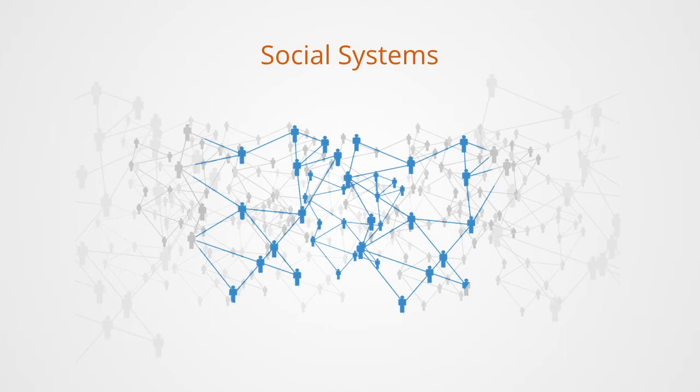This interdependence means what one does affects another and the whole organization. Social systems are composed of agents, the interdependent relations between them, and the organizational structures that emerge out of their interaction—what we call institutions that exist on various levels.